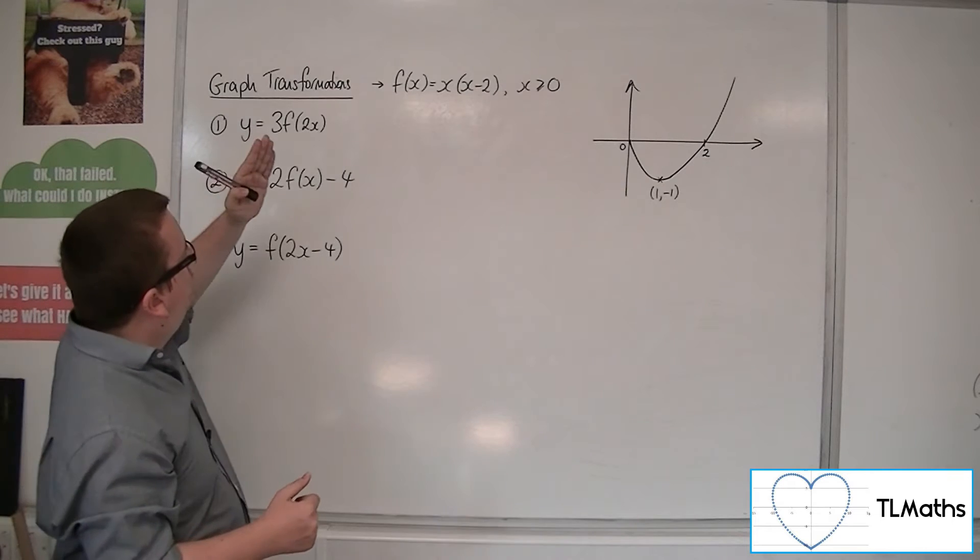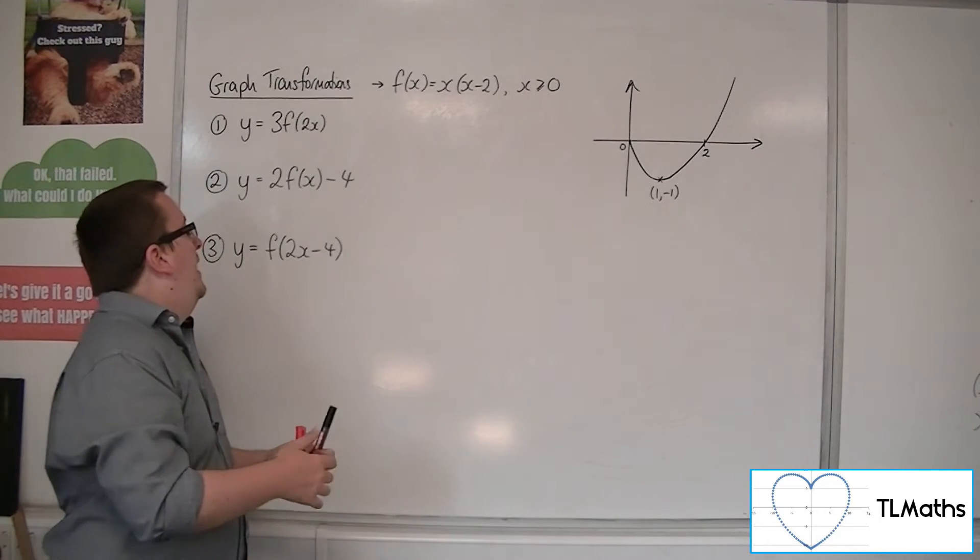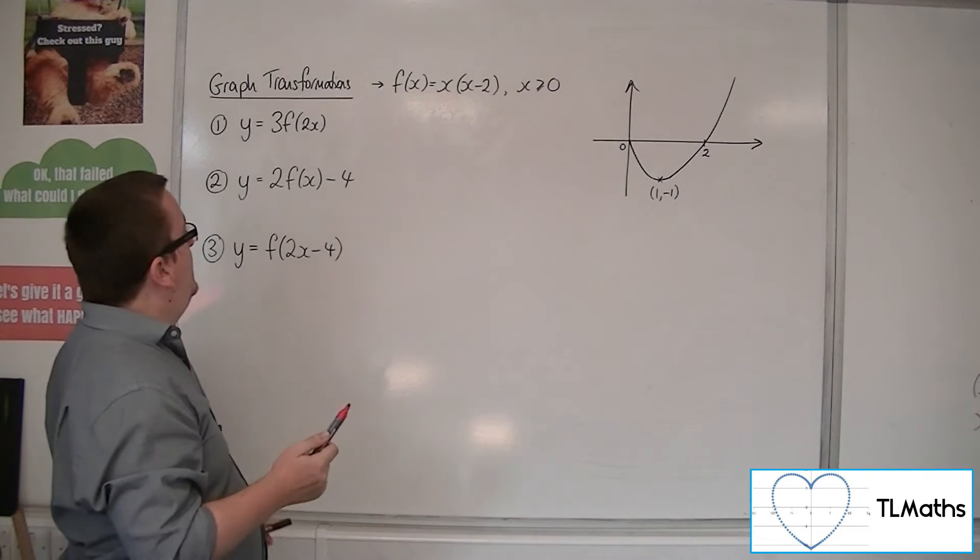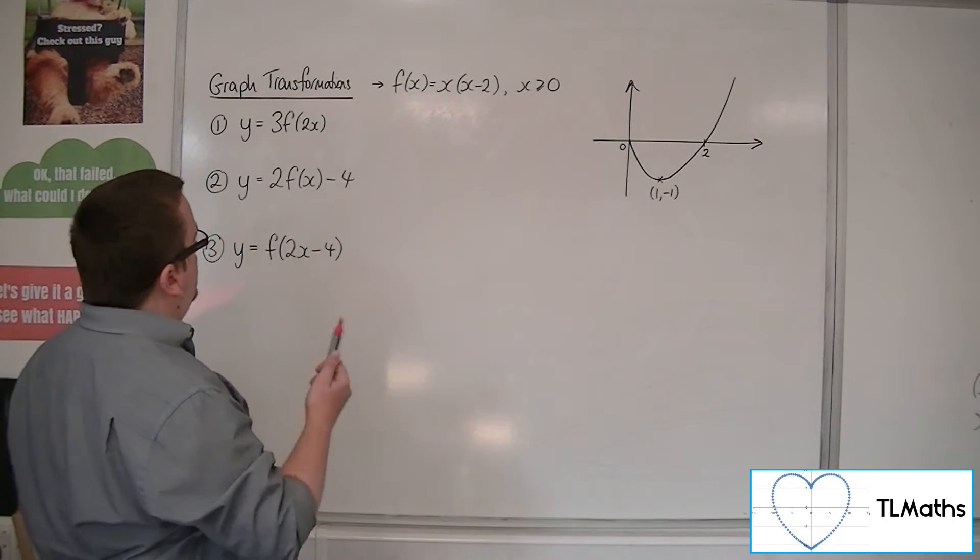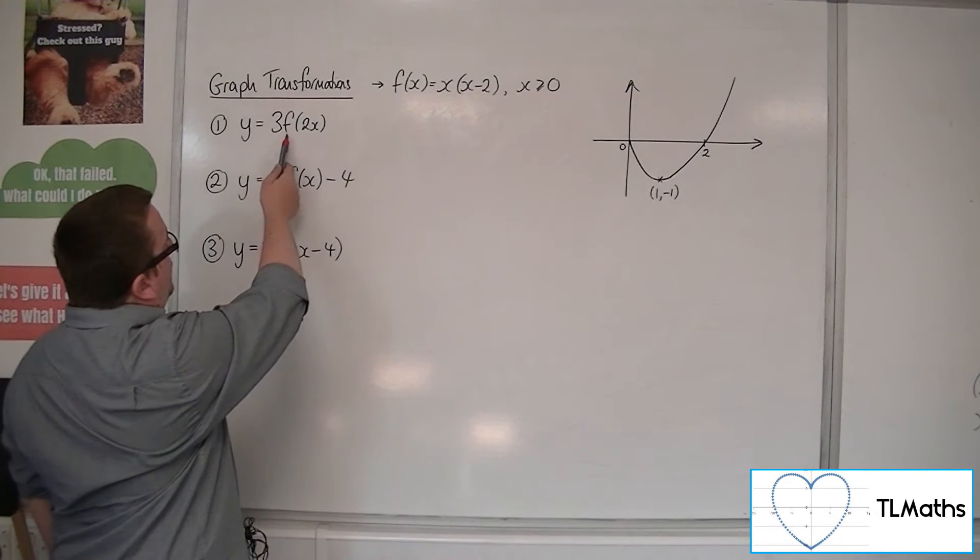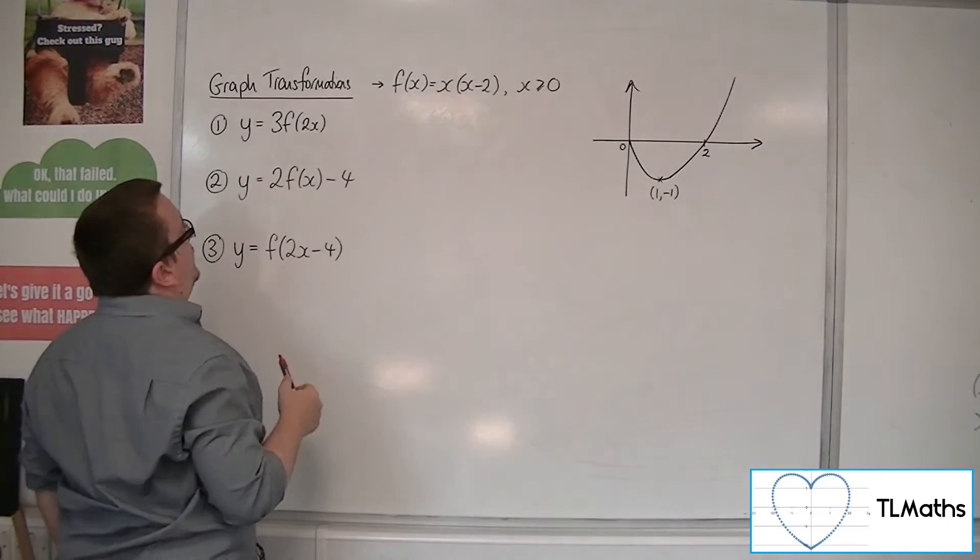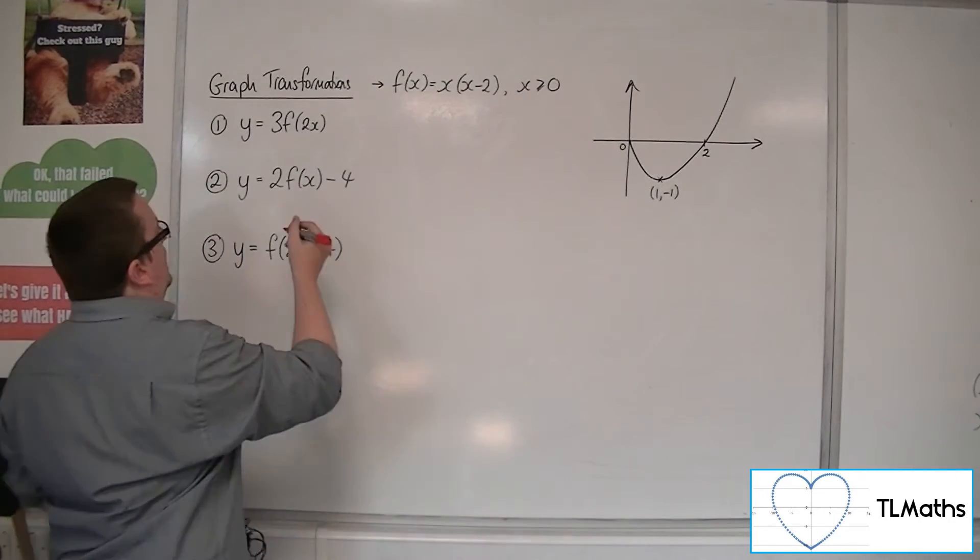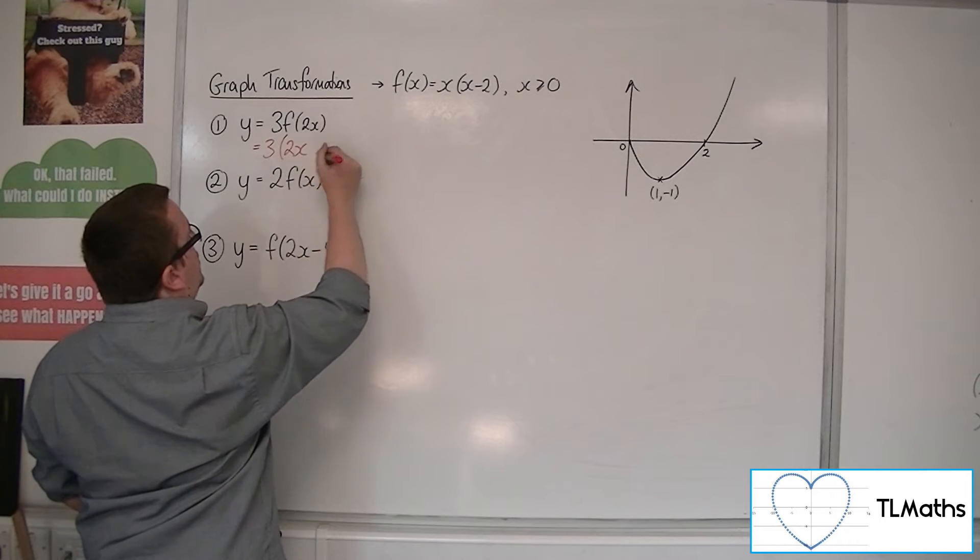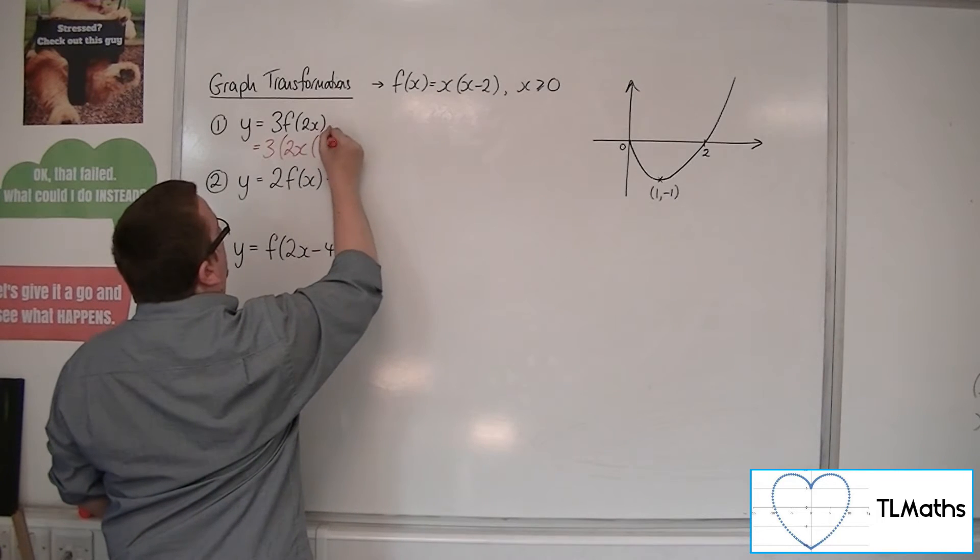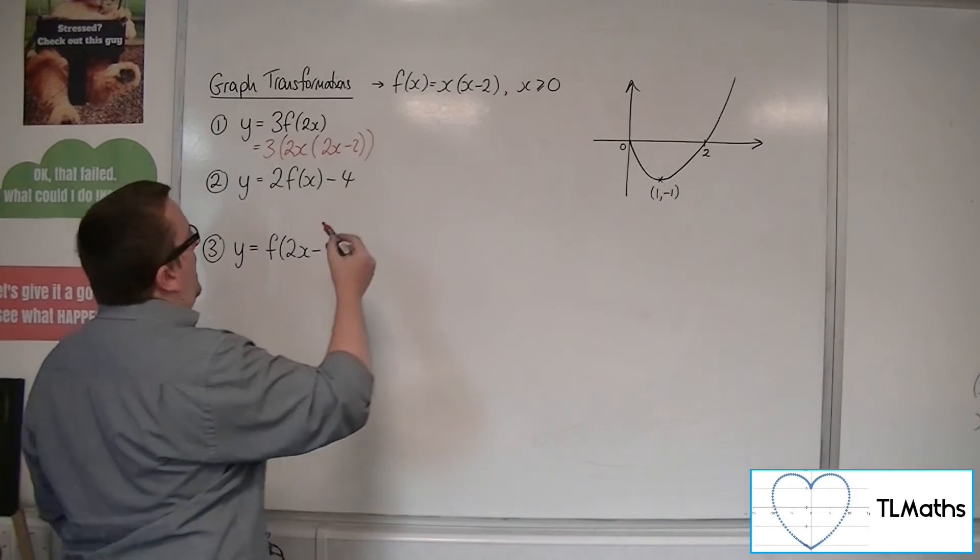Now for the transformed curve, it might be a good idea to actually find out what the new equation is first. So let's try it that way round. Y is equal to 3 lots of f of 2x. So I want 3 lots of this whole thing where each of the x's has been replaced with 2x.